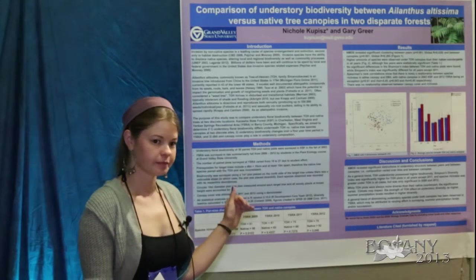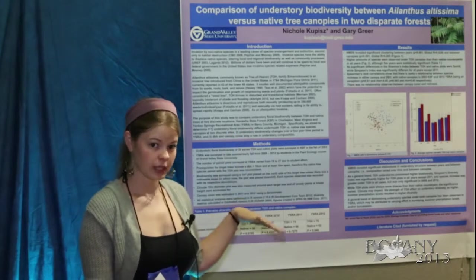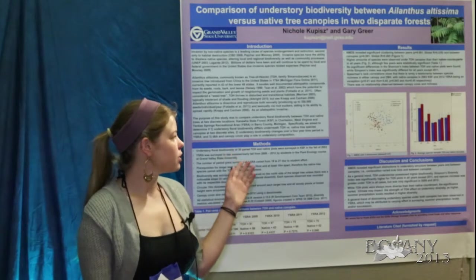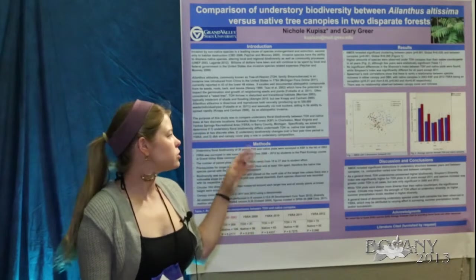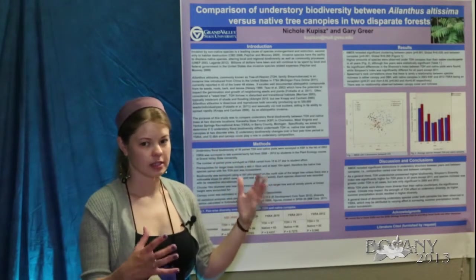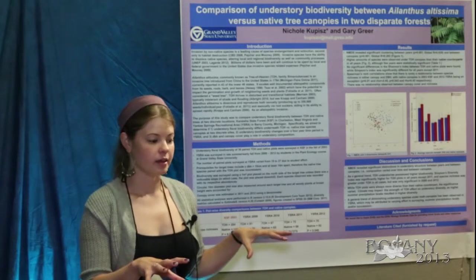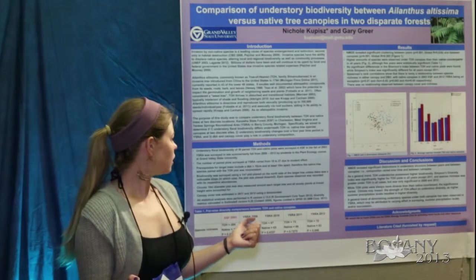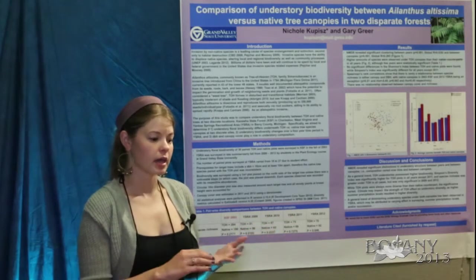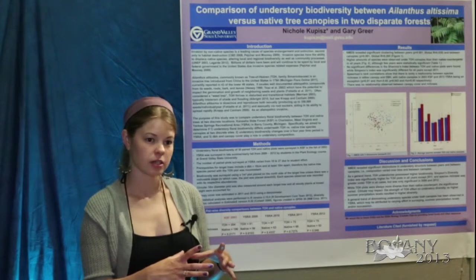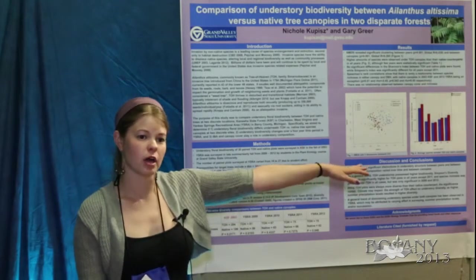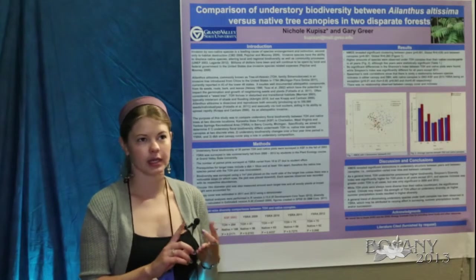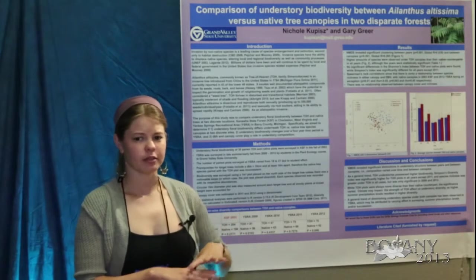Looking at each year individually in an NMDS, only 2011 was not significantly different — so 2009, 2010, and 2012 had significant differences in understory composition between Ailanthus and native tree pairs. The native tree used for pairing had to be any species at least 10 centimeters DBH and at least 15 meters away from the Ailanthus. We had dogwood species, pines, walnuts, oaks, and maples — a good variety.